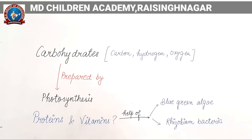Whereas proteins and vitamins have nitrogen as their main component. We can say that proteins and vitamins are nitrogenous substances. That means they are mainly made from nitrogen.